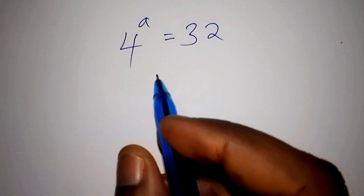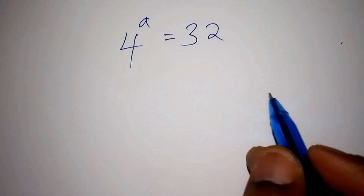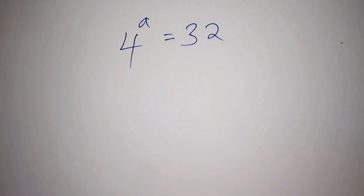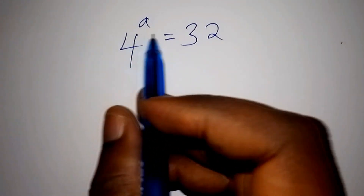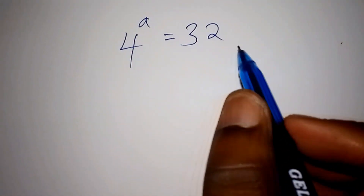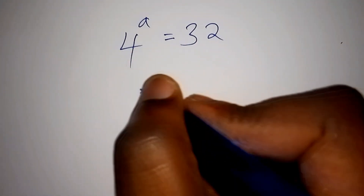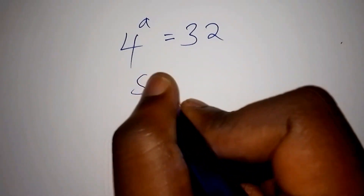Hello, can we solve such an amazing maths problem? Let us check how much you know how to solve it. We have 4 to the power of a is equals to 32. Let us now start with the solution.